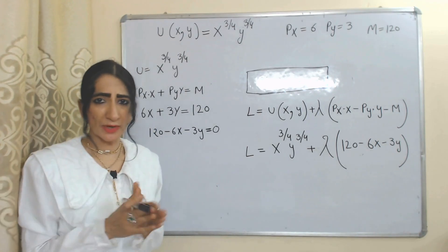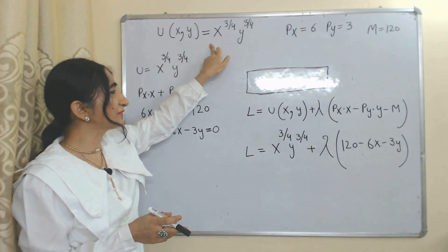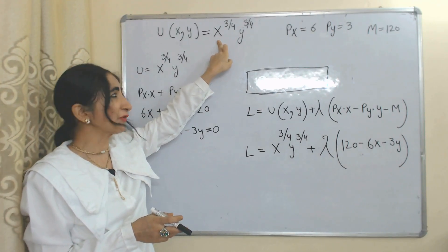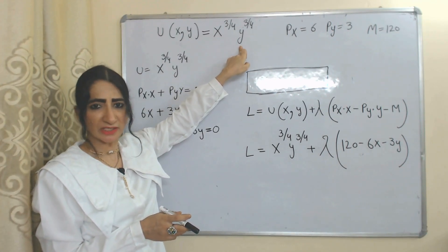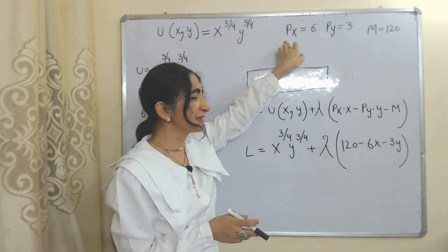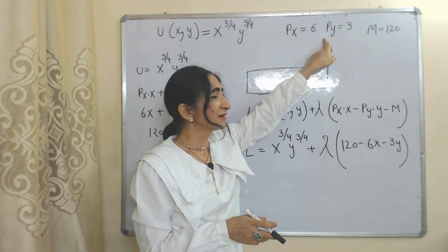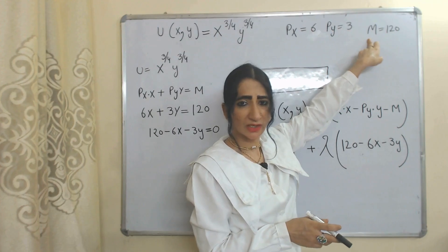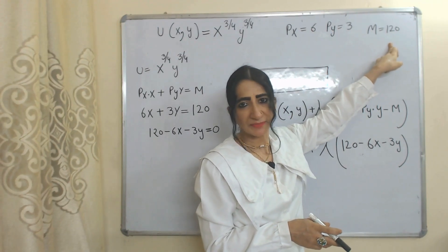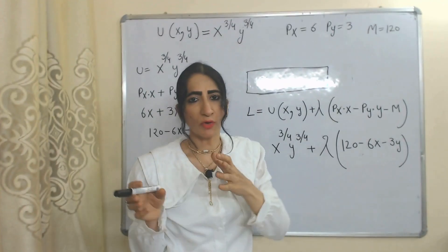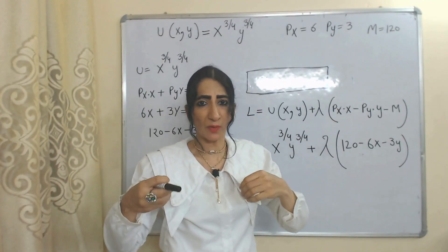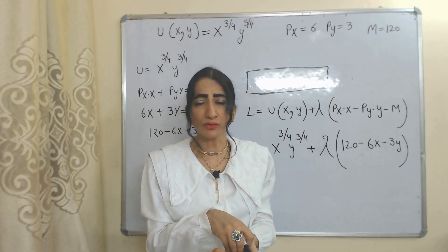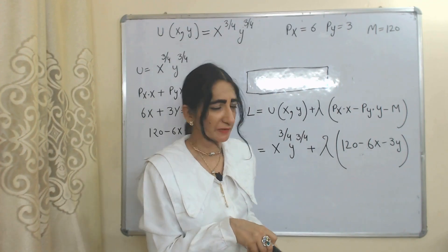Now we will look at one example. The given utility function is x to the power 3/4 times y to the power 3/4. Px (price of x) is 6, Py (price of y) is 3, and m (income of the consumer) is 120. We have to find out the optimum quantities of x and y goods which the consumer can buy with this given income and prices of goods, using the Lagrange function.